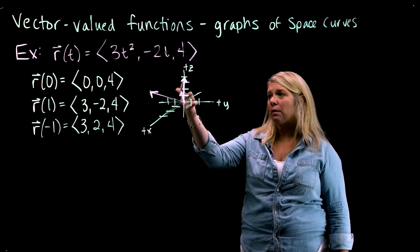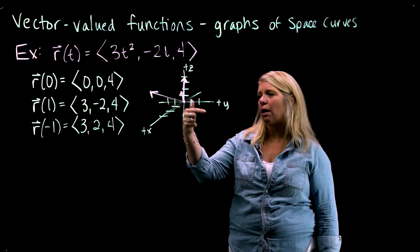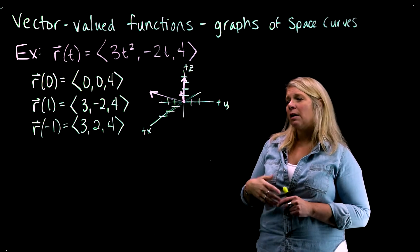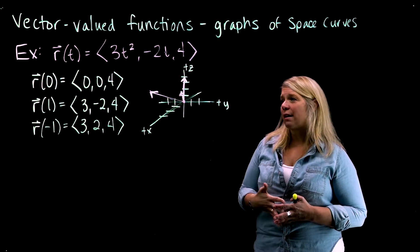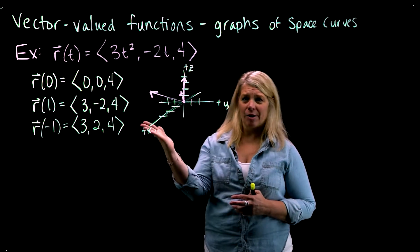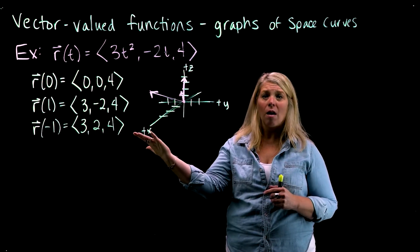I could label on a few of these vectors here. This one's r of 0, this one's r of 1, and this one's r of negative 1. And I could label those, but really, if I want to graph this vector-valued function, I really have infinitely many vectors to graph. And so I can't label all those, and I really can't draw all of those.